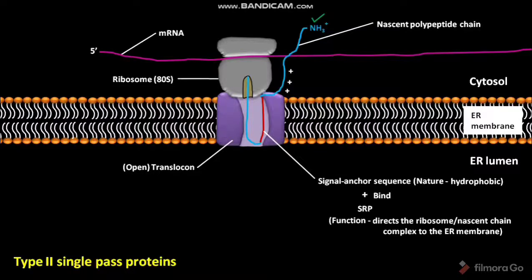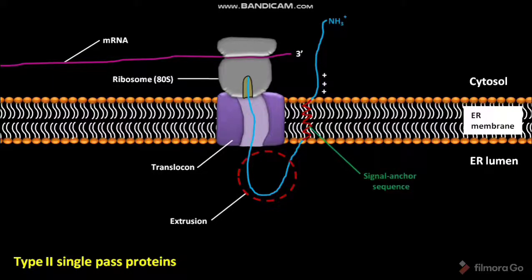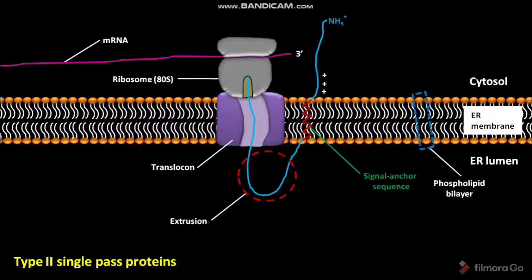These positively charged amino acids are located N-terminal to the signal anchor sequence. As the polypeptide chain is elongated, it is extruded into the ER lumen. The signal anchor sequence then moves laterally out of the translocon and anchors the polypeptide chain in the phospholipid bilayer. Thus, the signal anchor sequence also acts as a membrane anchor sequence.